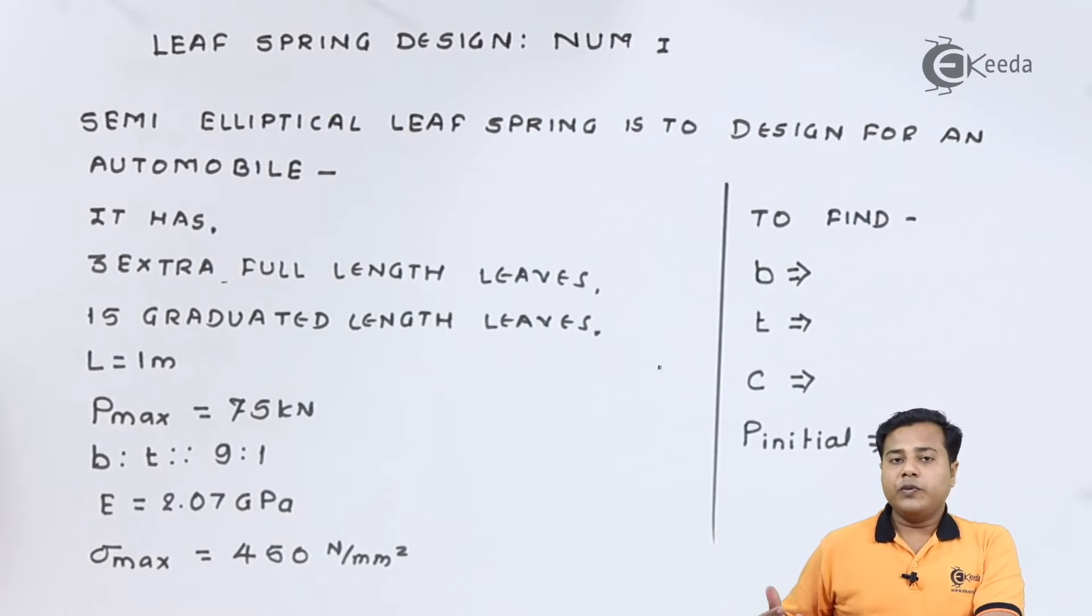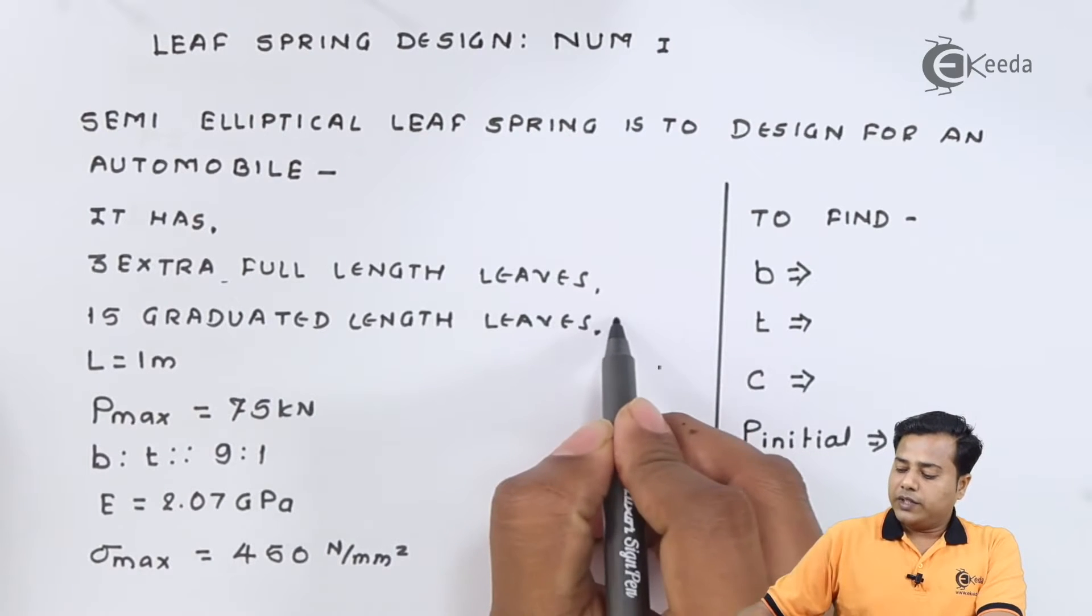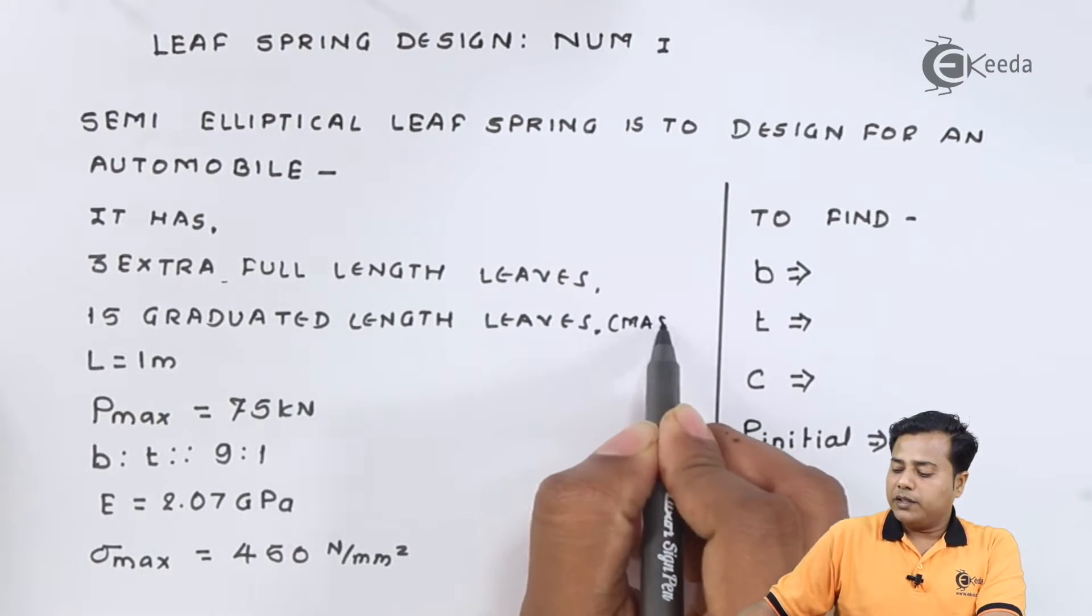So whenever they mention 15 graduated leaves or whatever may be the number, it also includes the master leaf. So we will say including master leaf.